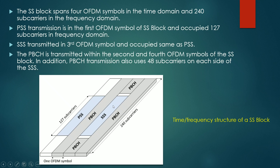PBCH is transmitted within the second and the fourth OFDM symbol of the complete SS block. In addition to that, PBCH is also transmitted using 48 subcarriers on both sides of the SSS. This is the total time-frequency structure of the SS block where the PSS, SSS, and PBCH locations are defined.